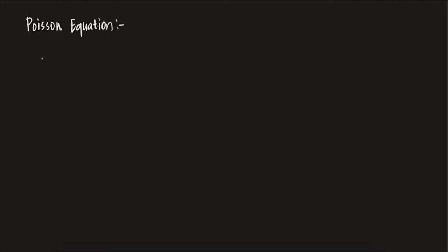Welcome students. In today's class, we are going to solve the Poisson equation. Essentially, the Poisson equation is: Laplacian of U equals F in omega, where omega is assumed to be open and connected. More precisely, minus Laplacian of U equals F in omega — this is the problem called the Poisson equation.